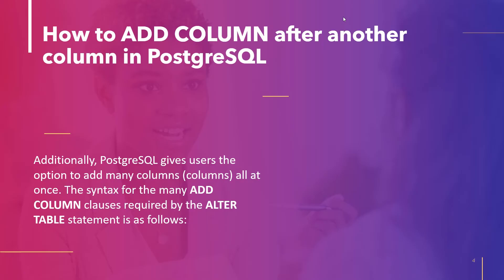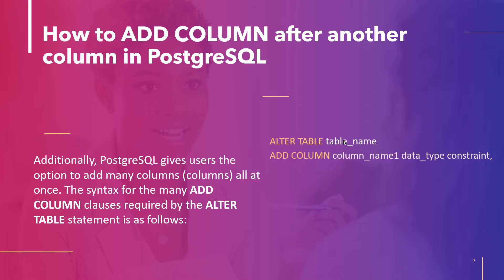The next topic is how to add a column after another column in PostgreSQL. PostgreSQL also provides a way to add multiple columns in one go. To do so, we use multiple ADD COLUMN clauses in the ALTER TABLE statement. The syntax is: ALTER TABLE table_name, ADD COLUMN column_name_1 data_type constraint, ADD COLUMN column_name_2 data_type constraint, and so on.